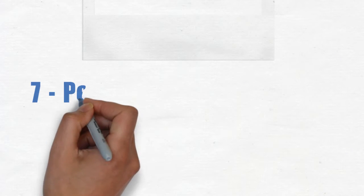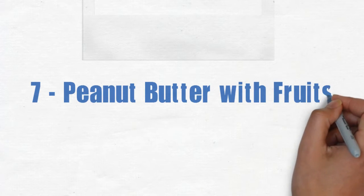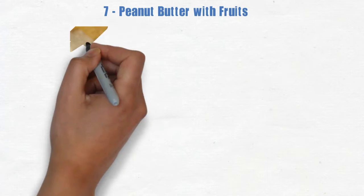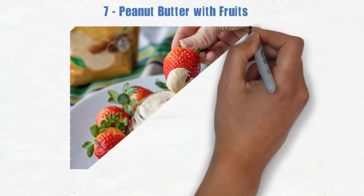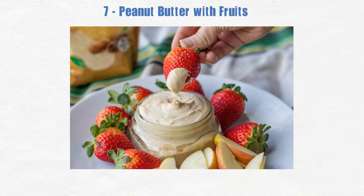7. Peanut butter with fruits. Apples, bananas, pears, whatever you fancy. Peanut butter goes well with all crisp fruits. You'll get a boost in protein and a healthy dose of vitamins and antioxidants.